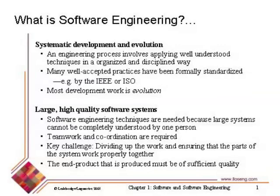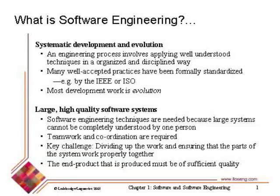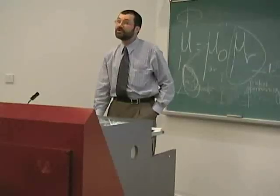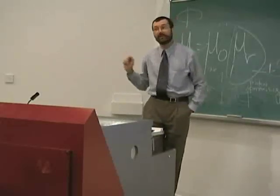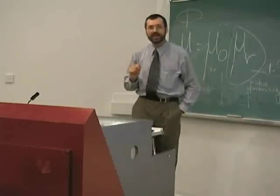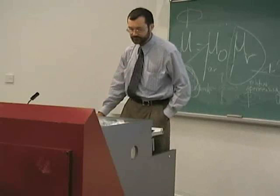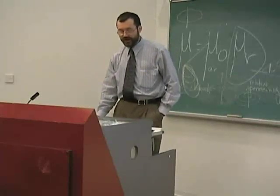Assuming we're not buying an existing solution, the next stage is systematic development and evolution. Systematic is key — we're going to do things in a disciplined way that has been shown to allow us to develop quality software. It's not just about development; we're also going to evolve and maintain systems, and in fact most of the work will be in evolving and maintaining systems. Relatively rarely do you start from scratch.